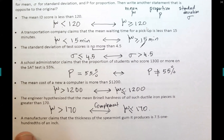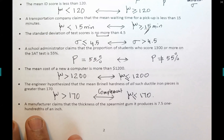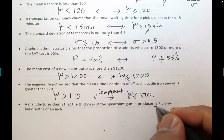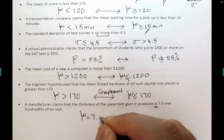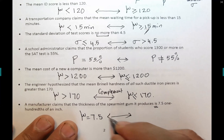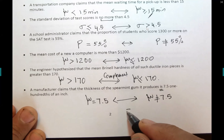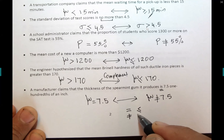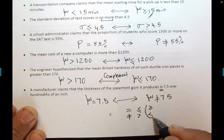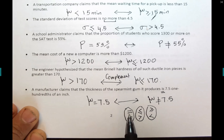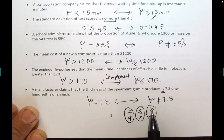This practice is about quickly identifying the opposite statement. Example: 'a manufacturer claims the thickness of spearmint gum is 7.5 hundredths of an inch.' The keyword 'is' means equals, so H₀: μ = 7.5, and Hₐ: μ ≠ 7.5 (not equal to). These signs can also be read as: equals/'is'/'are'; less-than-or-equal/'at most'; greater-than-or-equal/'at least'; greater-than/'more than'; less-than; not-equal-to.